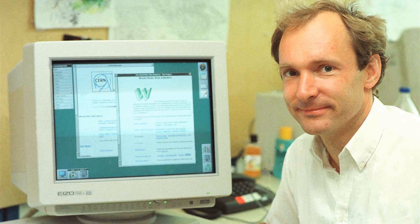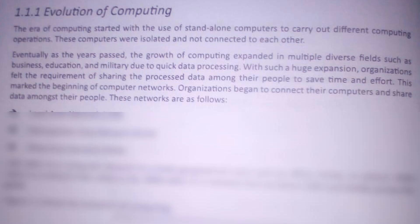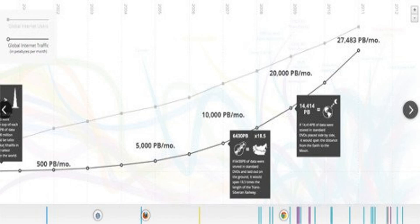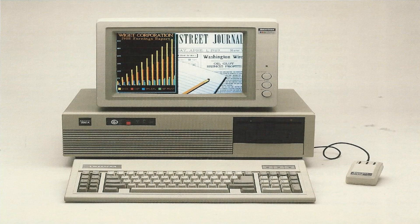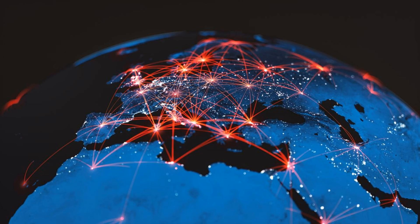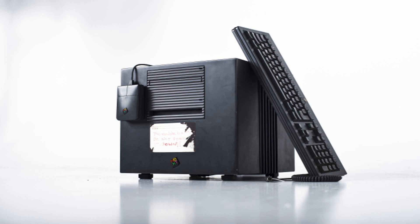Today, the web continues to evolve, with new technologies like artificial intelligence, machine learning, and the Internet of Things transforming the way we access and consume information. The growth and evolution of the World Wide Web has had a profound impact on our society, changing the way we work, communicate, and engage with the world around us.